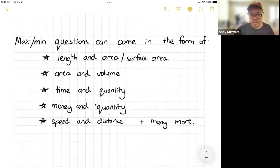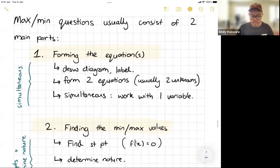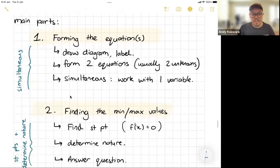But let's kind of break it down mathematically now. In terms of this, usually these questions come in the form of they'll talk about a specific length and they'll talk about area, or they'll talk about area and volume, or they'll talk about time and quantity, money and quantity, speed and distance. There's lots of different ways that these questions come out and so there's no one way but there are a couple kind of ground rules which I'm hoping to talk about. Now max and min questions, they usually consist of, there's two main parts in these questions.